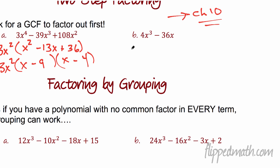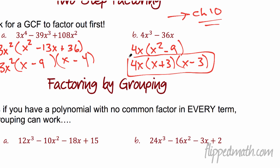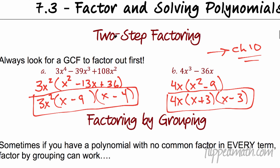Let's look at example B. I can pull out a 4x, which is going to leave x² − 9. That second term you have to be able to identify — you've got to look at it and recognize it as a difference of perfect squares. So the 4x is hanging out, and this is really (x + 3)(x − 3), because nine is a perfect square and it's a difference, meaning you're subtracting. Final answer: 4x times (x + 3) times (x − 3). That's basically review — you've done that before with Sully.